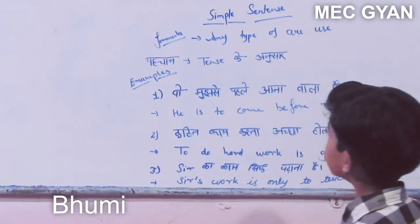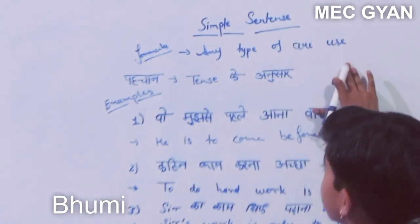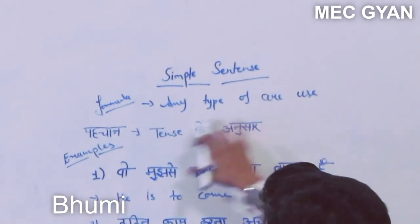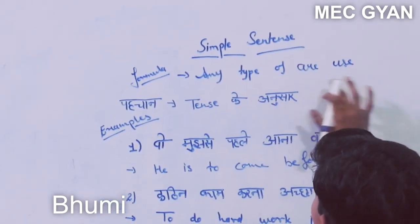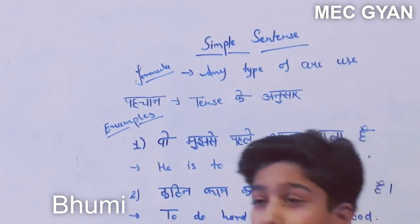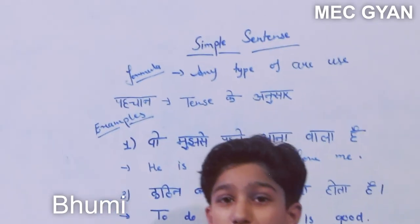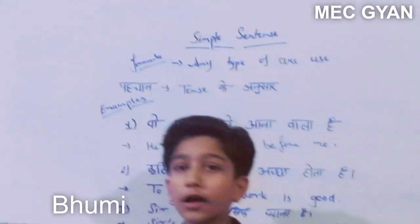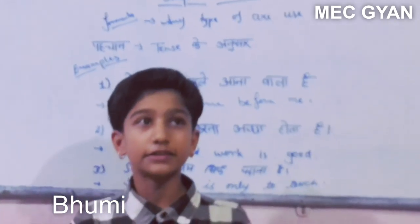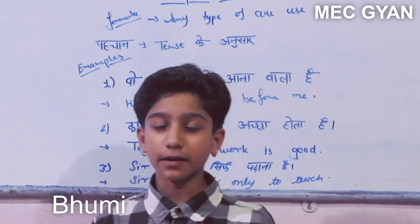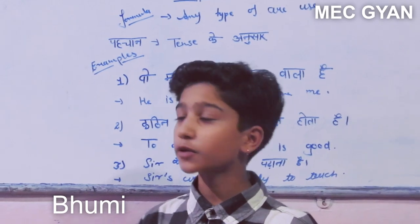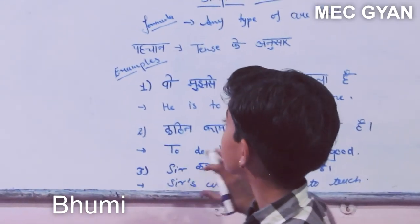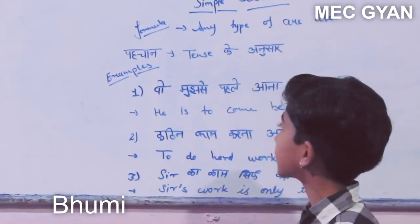We will learn the simple sentence — it's very simple. We use a formula with a specific type of term. If we make a simple sentence, we also use a specific model related to the term, and this term is tense.